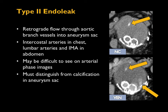Now on to type 2 endoleak, and this brings up protocoling. For complete assessment of endoleak, you really need a three-phase exam. We can identify type 1 endoleaks on arterial phase, and type 3 as well. But to identify type 2 endoleaks, you need a non-contrast and a venous phase, because type 2 endoleaks are more subtle — they can be slow and relatively smaller — and sometimes you won't see them on arterial phase images at all.